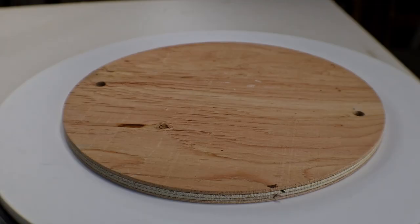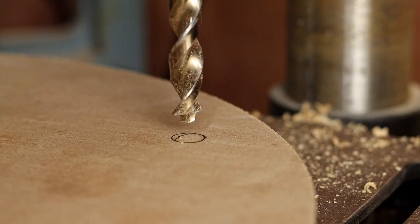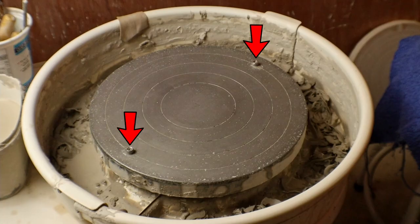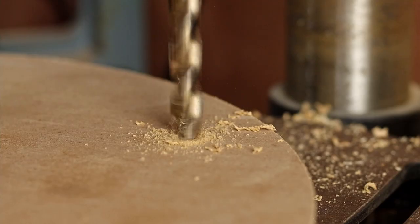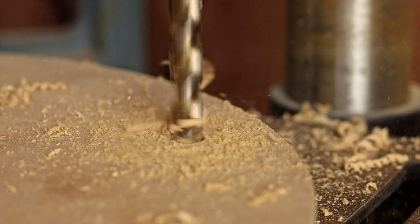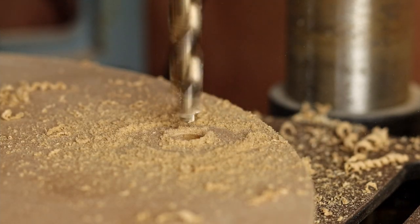I can use the template again to mark the spots for the holes. These holes shouldn't go all the way through they just need to go in as far as the heads of these bolts will and this drill bit is the perfect width for the task. So I set the depth stop on the drill and made some holes.